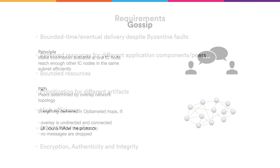Peer-to-peer uses a gossip mechanism to distribute messages in the subnet. The principle of the gossip protocol is to send messages that you have received or created to your peers in the subnet — analogous to humans spreading rumors. The peers in peer-to-peer are determined by an overlay network topology, and delivery is guaranteed in the order of the diameter number of hops, provided the overlay is undirected, connected, and no message is dropped.